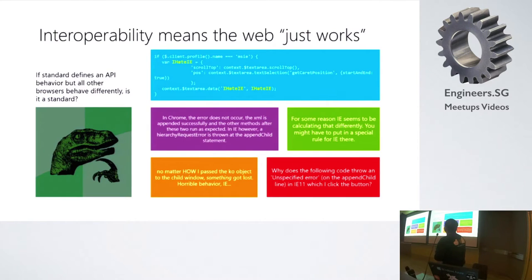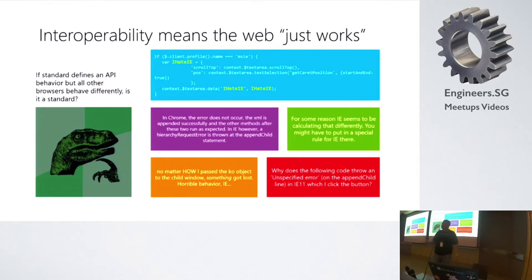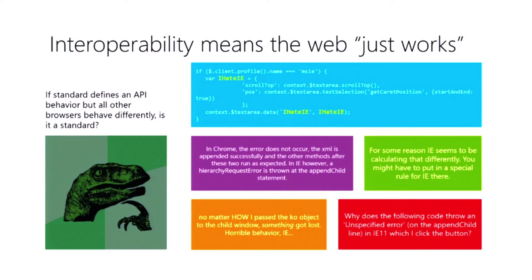Interoperability means the web just works. You remember IE hate? It's famous — on a very famous social networking site — they had this JavaScript where in Chrome the error does not occur, the XML is appended successfully, but for some reason IE seems to be calculating wrong. No matter how you pass the KO object or the child window, something got lost — horrible behavior in IE.